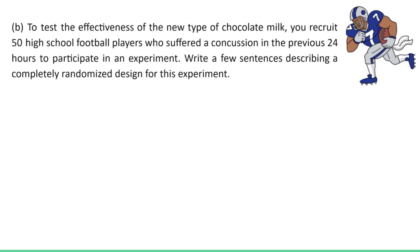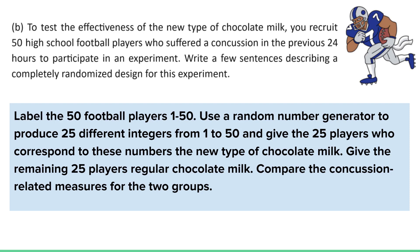Part B: to test the effectiveness of the new type of chocolate milk, you recruit 50 high school football players who suffered a concussion in the previous 24 hours to participate in an experiment. Write a few sentences describing a completely randomized design for this experiment. First, we need to talk about our labeling, similar to how we would label in a survey or observational study. We're going to label the 50 football players 1 to 50.